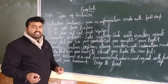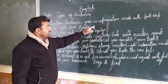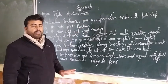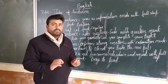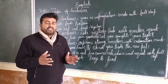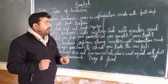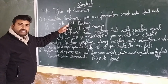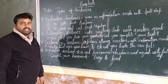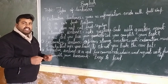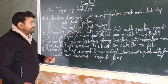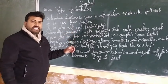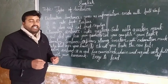So what is a declarative sentence? A declarative sentence gives us information. Some examples are here: 'He eats food' — this is a declarative sentence, and it is positive. 'He doesn't eat food' — this sentence is negative, though it is still a declarative sentence.